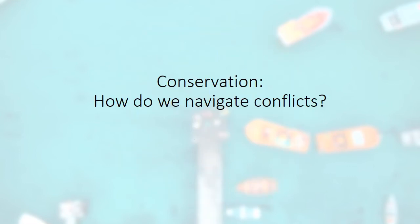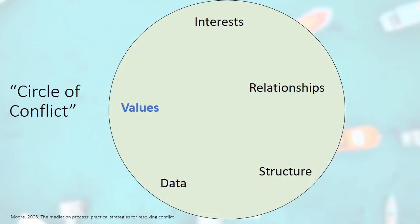Another thing human dimensions and social science research helps us with is understanding and navigating conflicts — conflicts around our marine systems, our resources, how we use our resources, who gets to access them, and so on. Just as there are many things that shape our behavior, there are also many sources of conflict when we're talking about marine resources and ecosystems. One that we often overlook is the role that values play in shaping our views and behaviors, and contributing to conflict, misunderstandings, and disagreements around resources like the ocean.